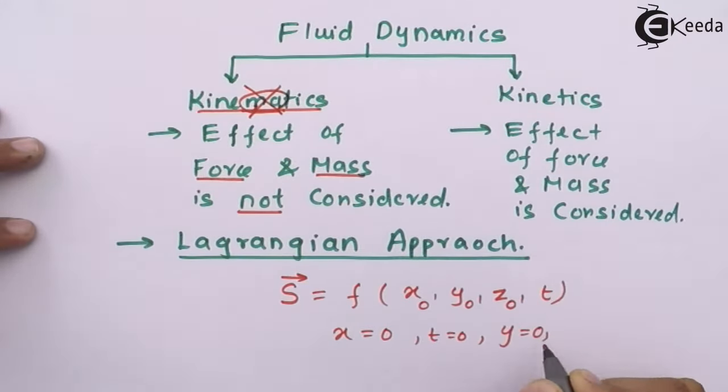Similarly, Aᵧ = ∂v/∂t + u·∂v/∂x + v·∂v/∂y + w·∂v/∂z — that is, change in velocity along y with time and with respect to x, y, and z. And A_z = ∂w/∂t + u·∂w/∂x + v·∂w/∂y + w·∂w/∂z. These are the individual accelerations along x, y, and z directions.